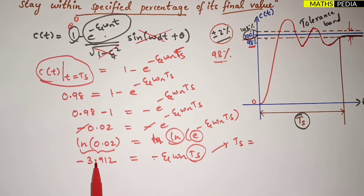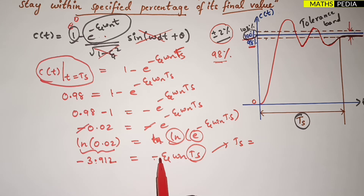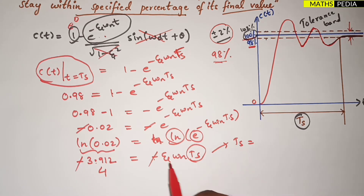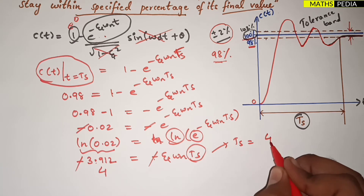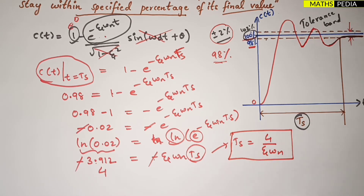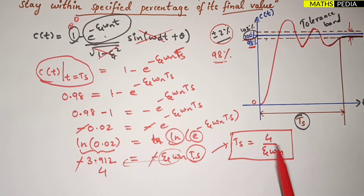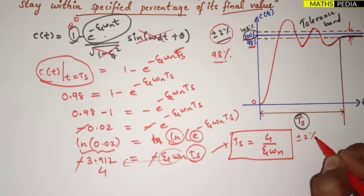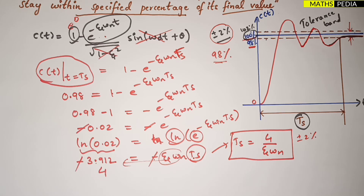The two minus signs cancel. We approximate 3.912 as 4. Bringing ζωn to the other side, we get: Ts = 4 / (ζωn). This is the settling time formula for a plus or minus 2 percent tolerance band.